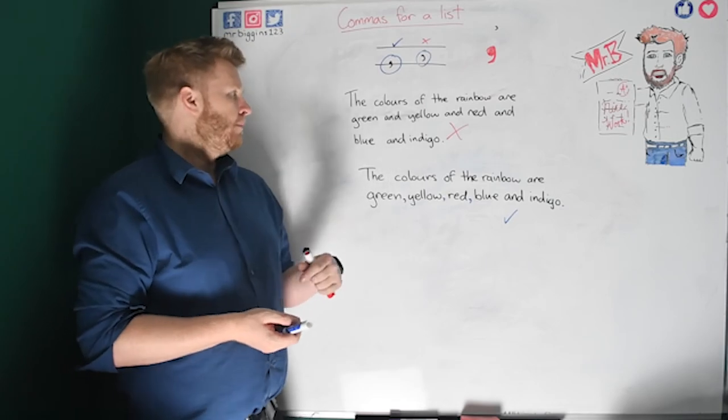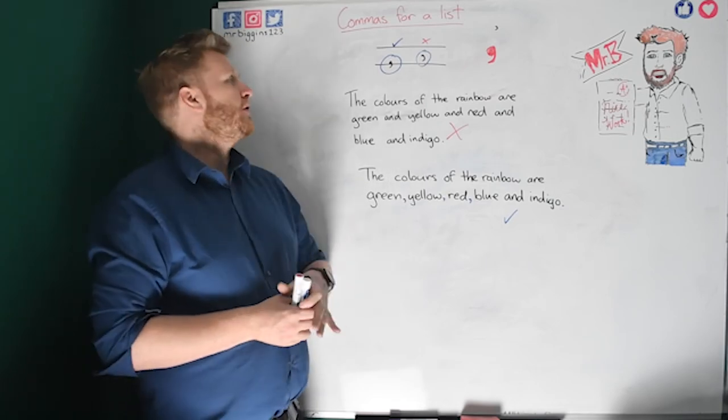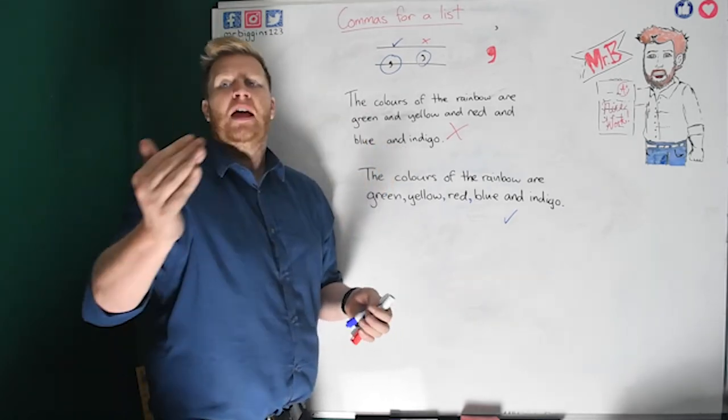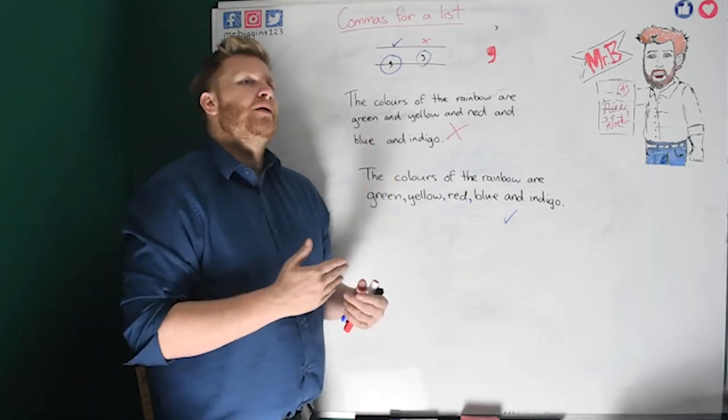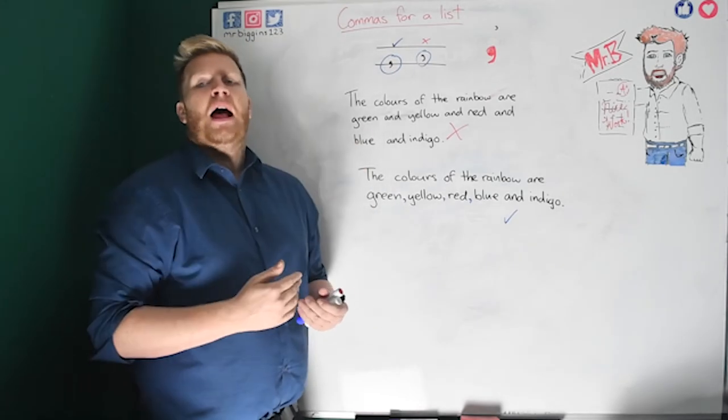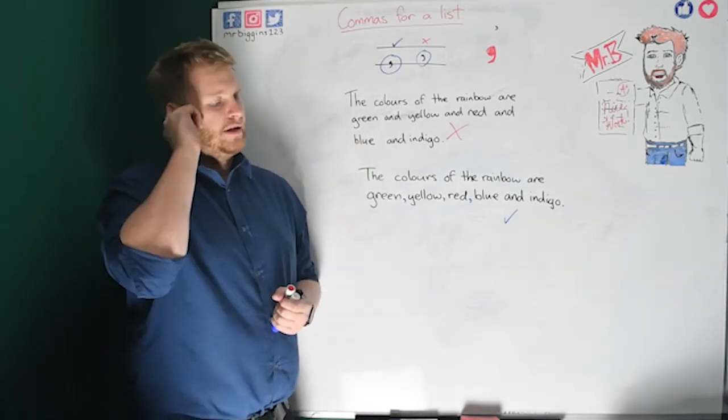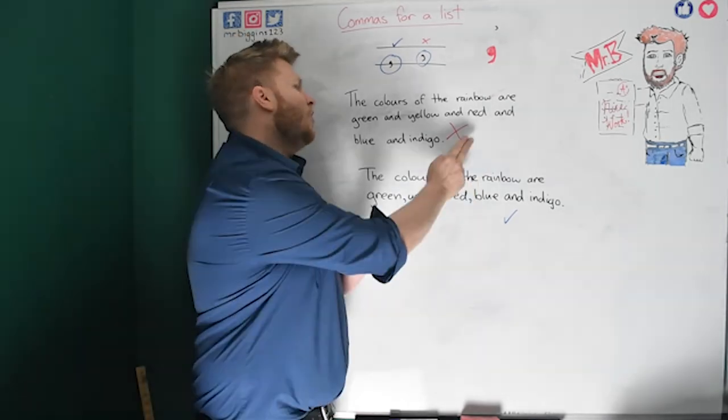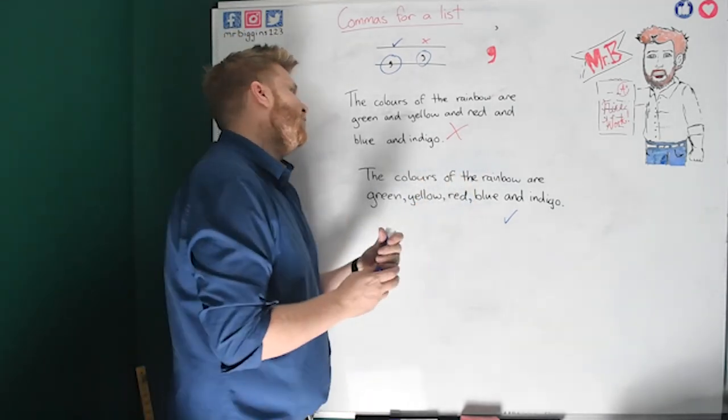What we're going to do today is look at using this comma, this lovely little fella, for something called a list. Now, a list is lots of items in a row. So, if someone asks you something, you're going to say more than one thing and we use commas to make those lists work. I've got the same list here and I've got it done the wrong way and I've got it done the right way. So, let's have a look at the first one.